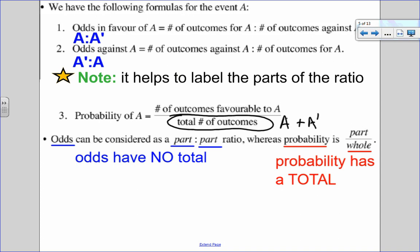So the total number of outcomes are all the ways A can happen, plus all the ways A can't happen. So in terms of ratios, I want you to think of odds as a part to part ratio, because there's no total, whereas probability is a part to whole ratio, because the whole is the total.